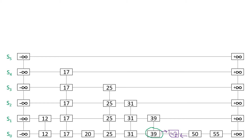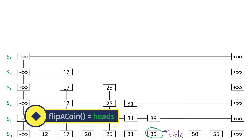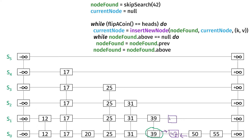You see that these other towers have the same keys on different levels. The reason that happens is because now we're going to flip a coin. If it's heads, we're going to add another node to this tower. If it's tails, we stop. So let's say we flip the coin and it was heads — we're going to insert another node above the one we just inserted in the same tower.